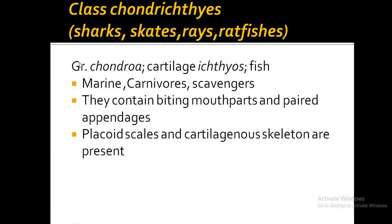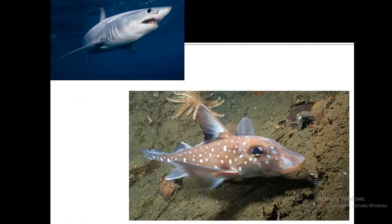They contain biting mouthparts, pointing towards sharks. Paired appendages are also present. Members of class Chondrichthyes include placoid scales. In addition to the cartilaginous skeleton, they have placoid scales, which are plate-like scales. These give the members an appearance like sandpaper, which we call 'regmaat.' This is the shark and ratfish characteristic of the class Chondrichthyes.